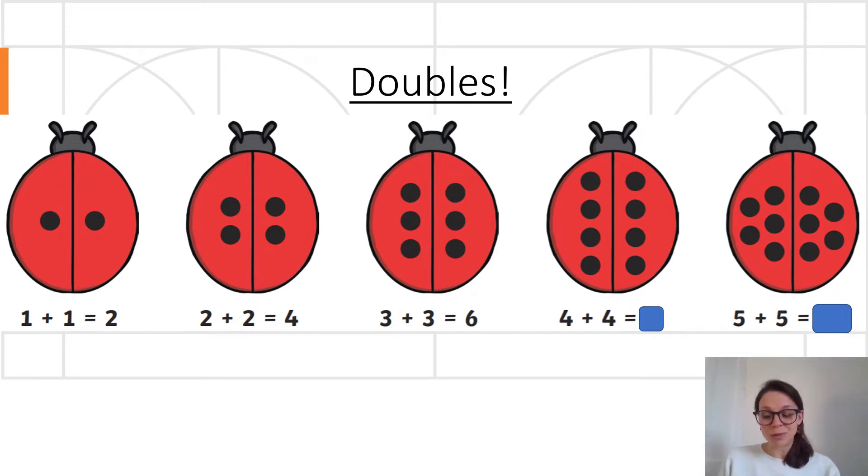Right, your turn. Write them down on your whiteboard. What's four add four or double four? And what's five add five? That's a nice easy one because it's one of your number bonds. Pause the video here if you want to. Write it down on your whiteboard and let's see how you've got on.